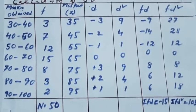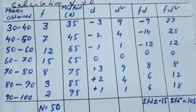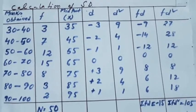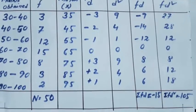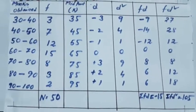In this way, the left side is the marks, then F, mid value, 30 plus 40, 70, 70 by 2, 35. In this way, D, D square, FD, FD square, sum of FD is minus 15, and sum of FD square is 105.